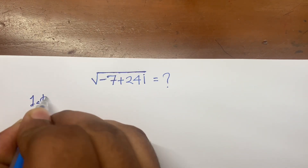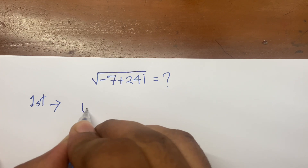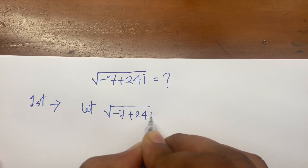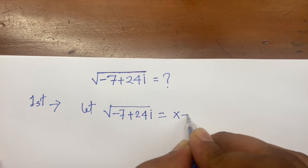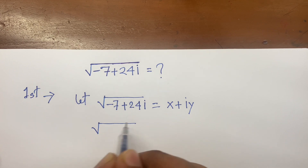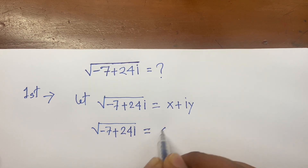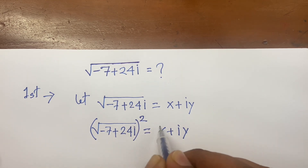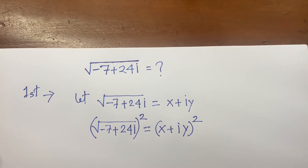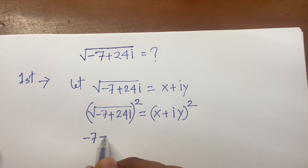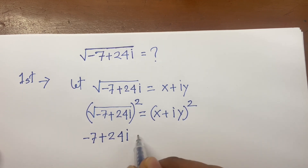Let square root of minus 7 plus 24i equal to x plus iy. Now squaring both sides, the square root is cancelled, so we find minus 7 plus 24i is equal to (x + iy)².